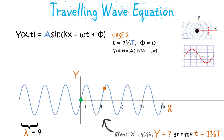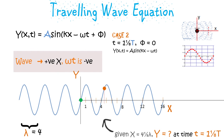This is how we get kx minus omega t in our equation. The important thing to note is that when we consider the wave to be moving in the positive x direction, we take omega t as negative. Similarly, if the wave is moving in the negative x direction, we take omega t as positive.